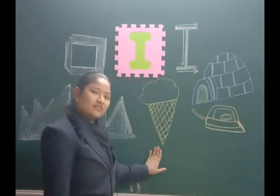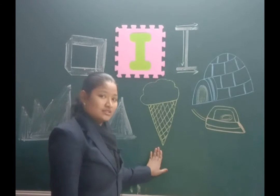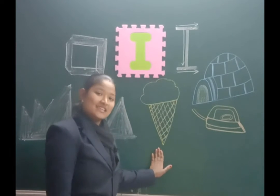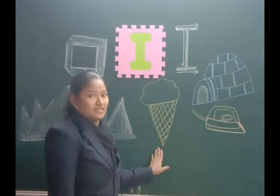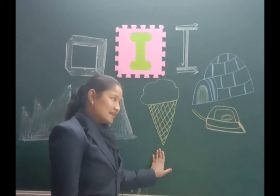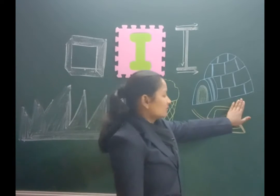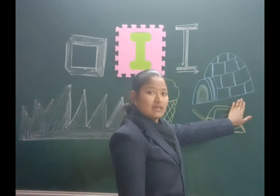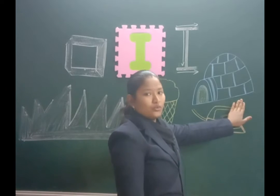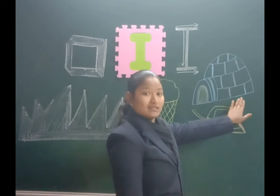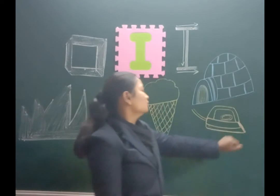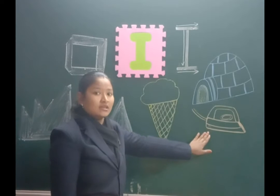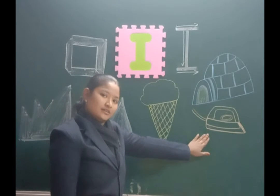What is this? Ice cream. It is ice cream. Then this one — it is igloo. It is igloo. Then, iron. It is iron.